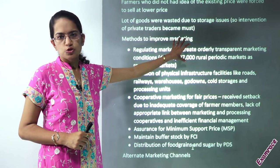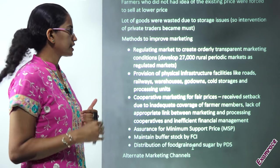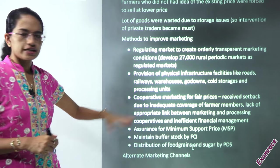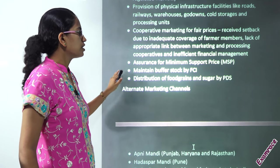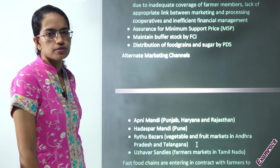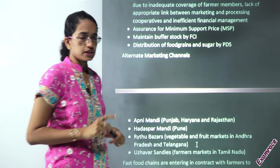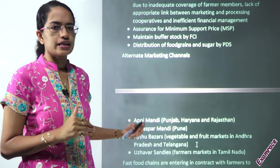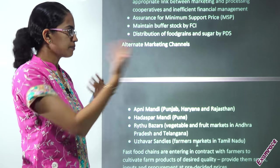What are the methods to improve marketing? We can regulate the market for a transparent marketing system, provide good physical infrastructure, do cooperative marketing at fair prices, and ensure minimum support price. We can maintain a buffer stock and distribute food grains and sugar through the public distribution system — which we have already covered in previous lectures. Refer the concept of public distribution system in our NCERT — it's a very, very important concept.